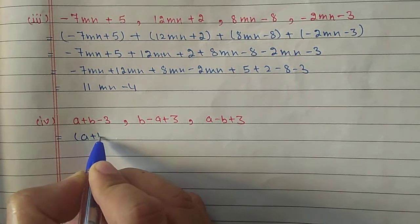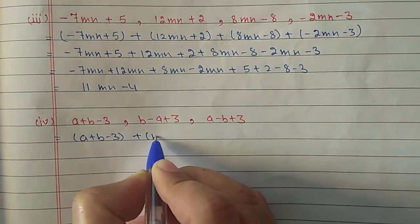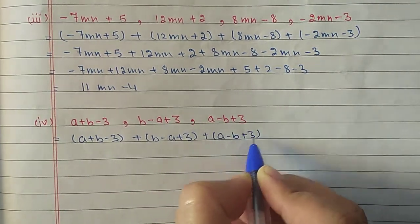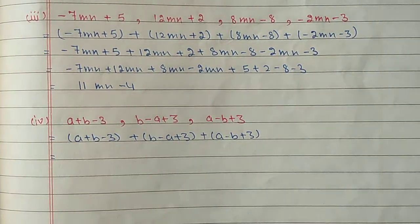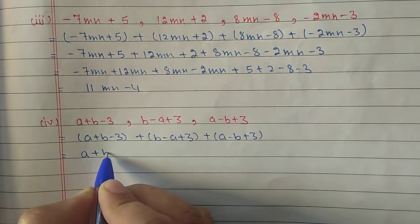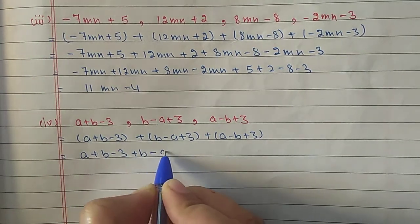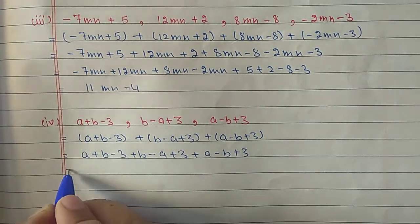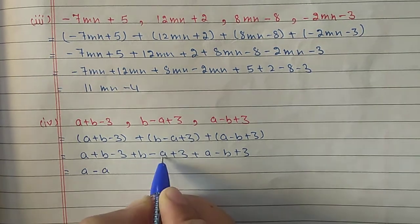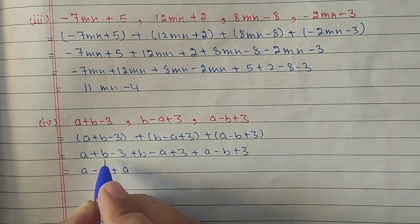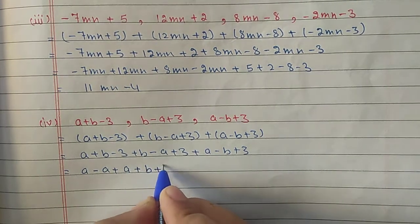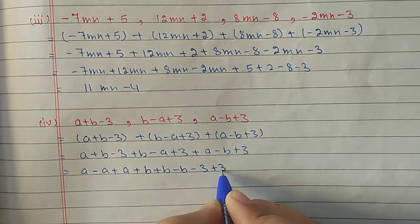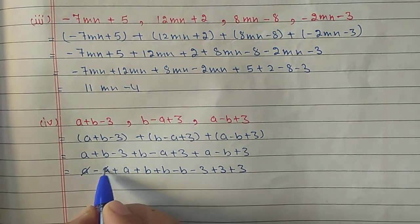Fourth part: we have to find the sum of three expressions: a plus b minus 3, plus b minus a plus 3, plus a minus b plus 3. Remove brackets — plus is there so they open as is: a plus b minus 3 plus b minus a plus 3 plus a minus b plus 3. Now we take all like terms together: a terms, then minus a and plus a; b terms: plus b and minus b; constants: minus 3 plus 3 and plus 3.